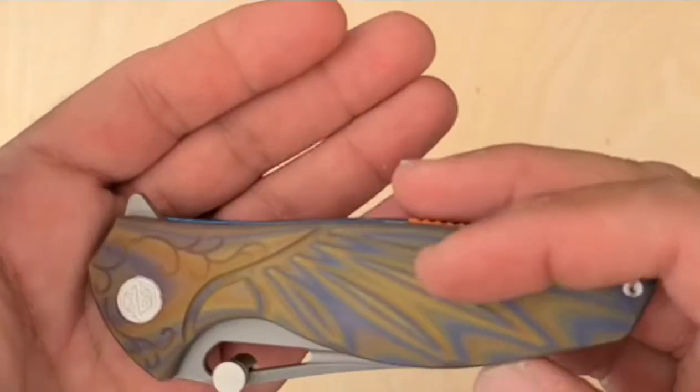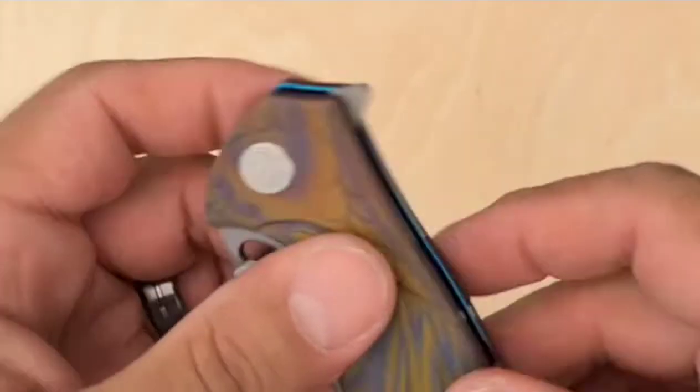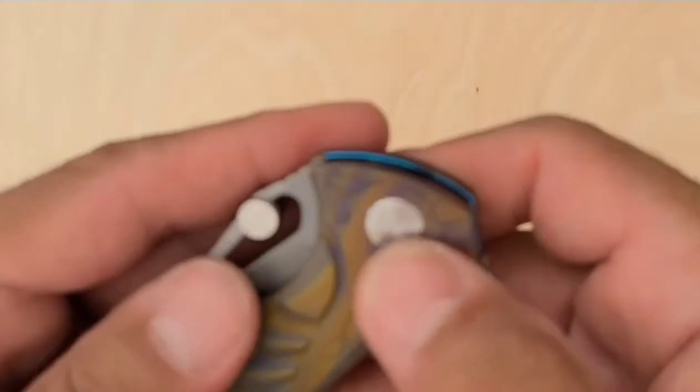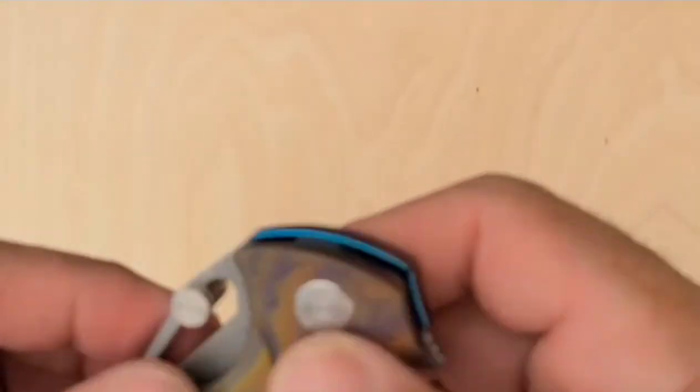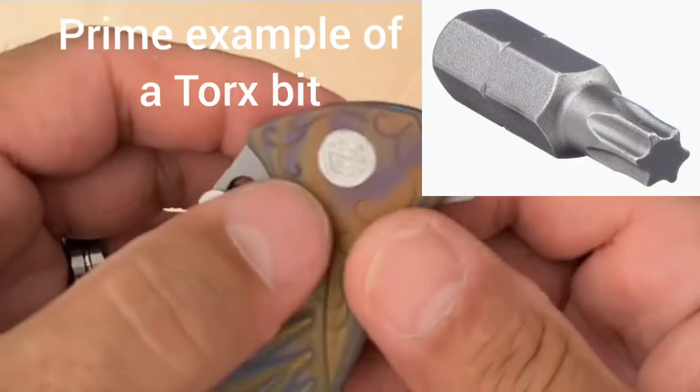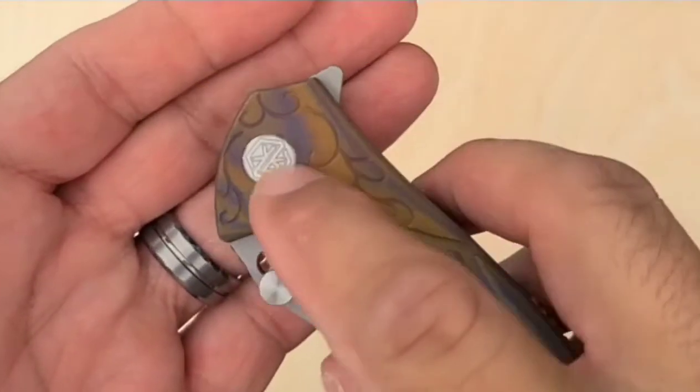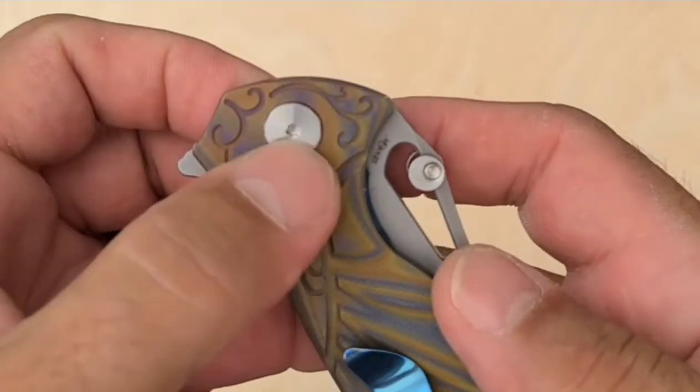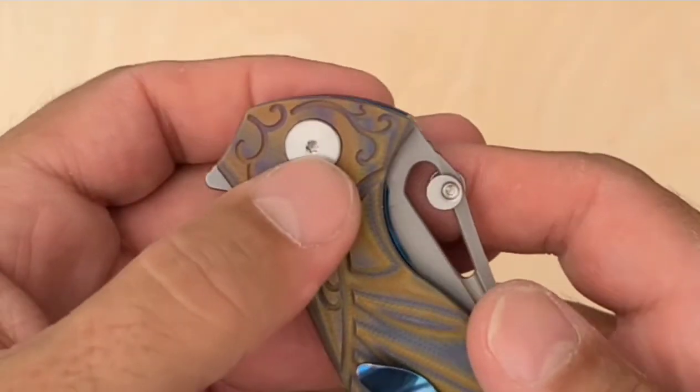So what are we going to do? How do we even adjust a pivot? Well, a lot of times there'll be a little six-sided tool called a Torx. There's a Torx on this side and the Torx on this side. Usually it's an 8 or a 10, something like that. That's the size of the Torx bits.